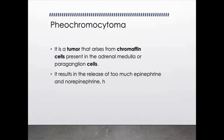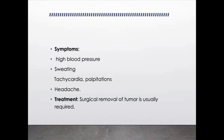Pheochromocytoma is a tumor that arises from the chromaffin cells present in the adrenal medulla. These cells cause the release of epinephrine and norepinephrine, so when there is a tumor there will be excess release, increasing all sympathetic effects. For example, the patient will have high blood pressure, increased sweating, tachycardia, palpitations, and headache. The only treatment available is surgical removal of the tumor.